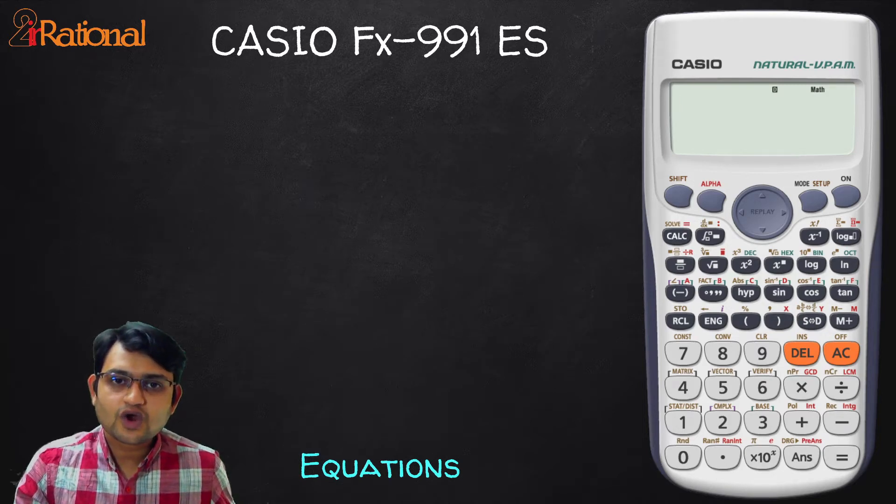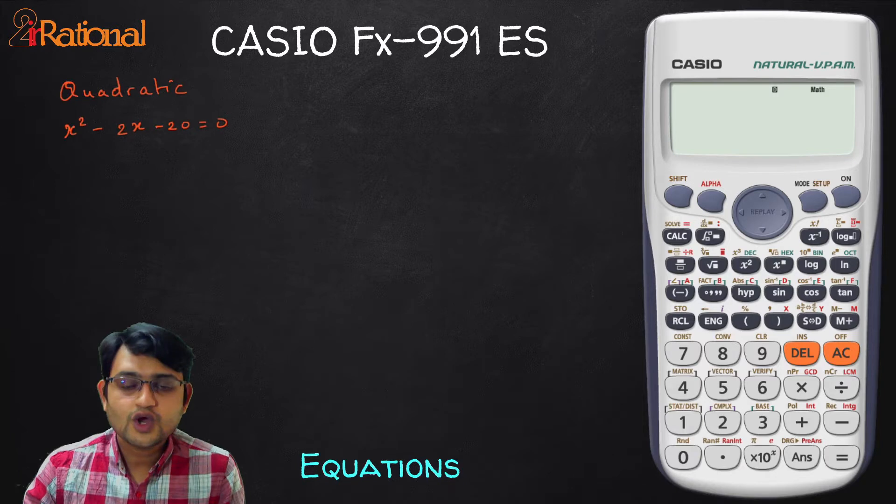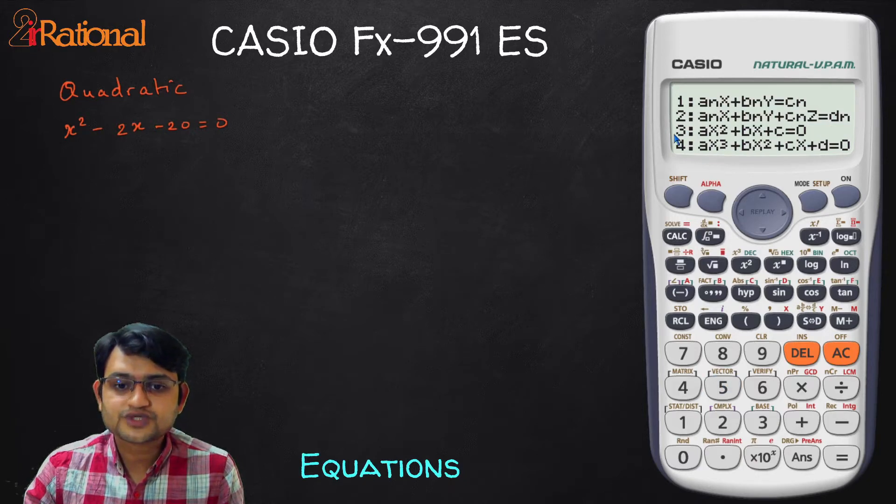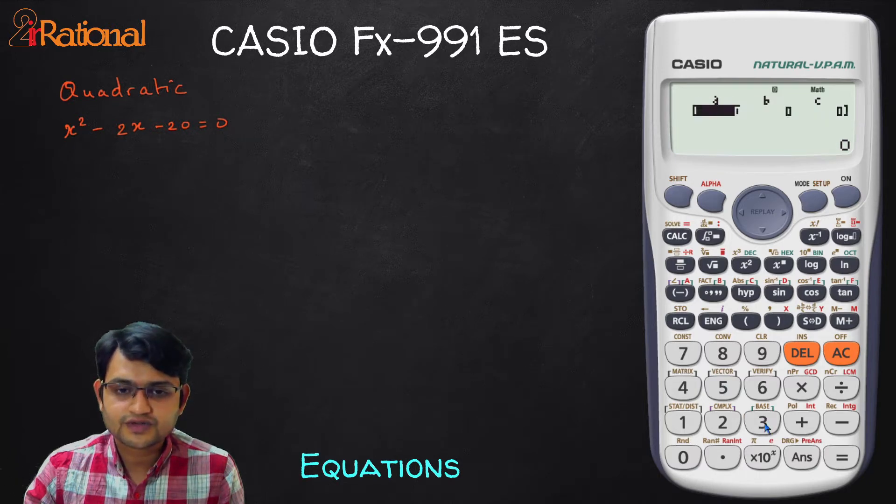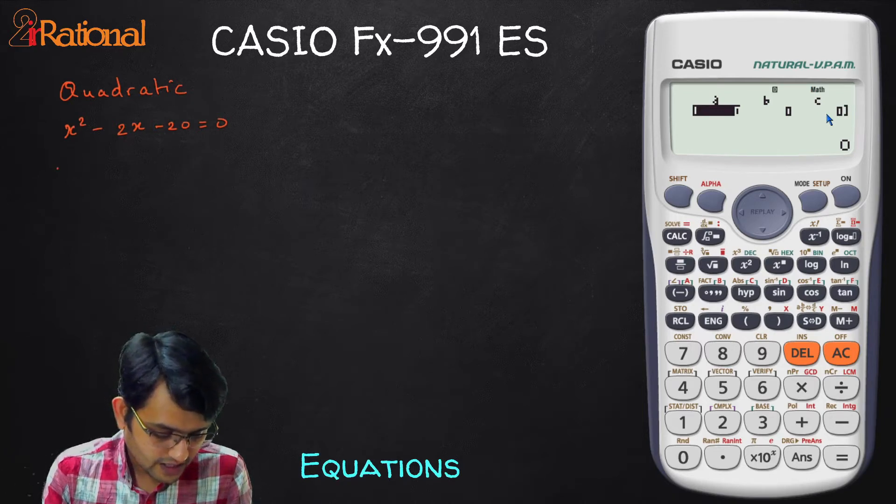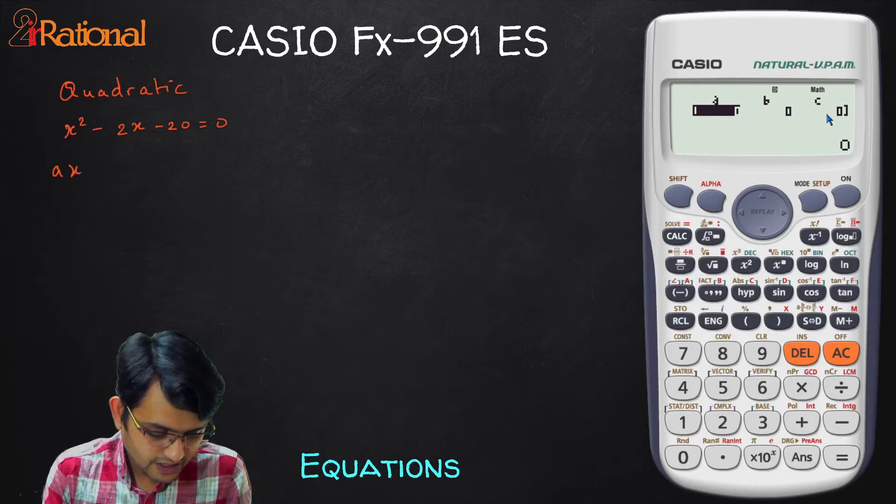First let's take a quadratic equation into account. To go to quadratic equation in our calculator, we will press mode and we can see 5 is option of equation. I will press 5 and third option is quadratic equation 3. Now it asks you for A, B and C. So for any quadratic equation, a general equation is going to be AX square plus BX plus C is equals to 0.